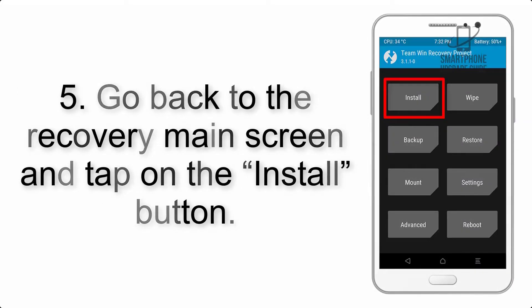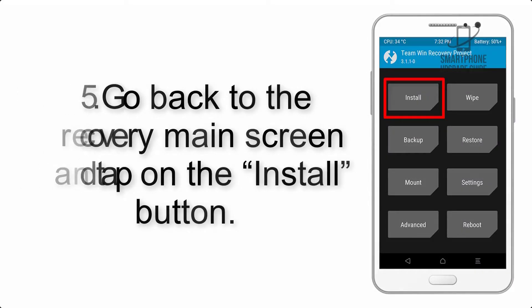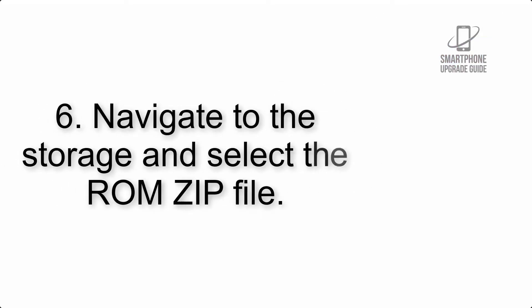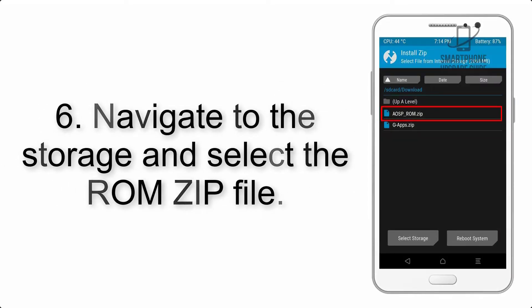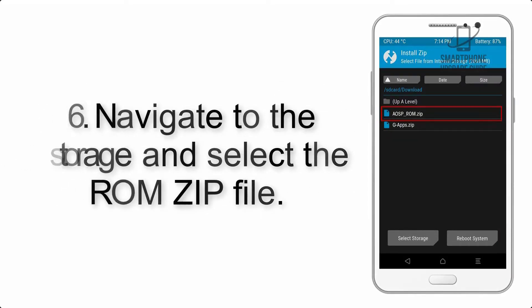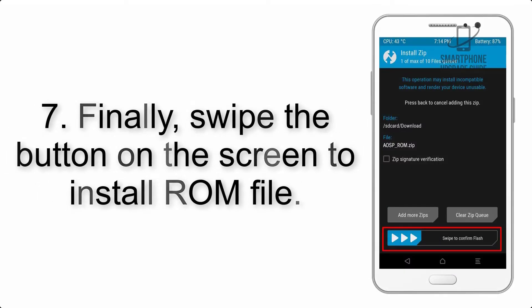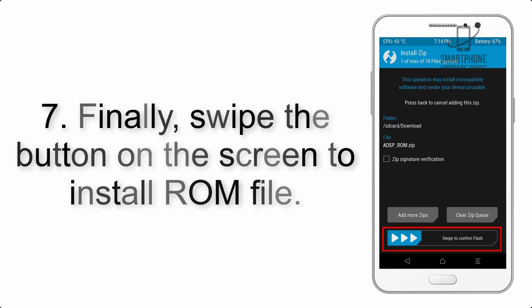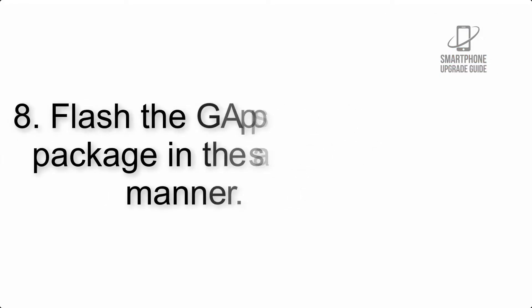Step 5: Go back to the recovery main screen and tap on the Install button. Step 6: Navigate to the storage and select the ROM zip file. Step 7: Finally, swipe the button on the screen to install the ROM file.